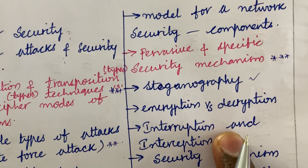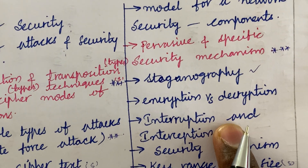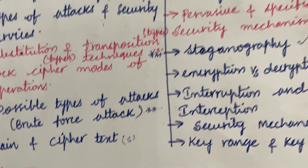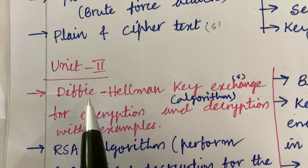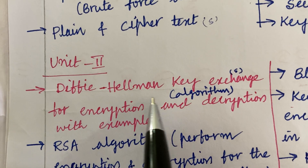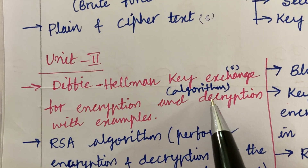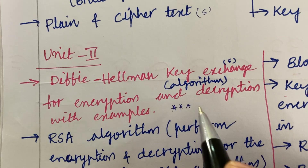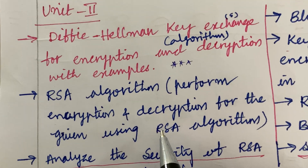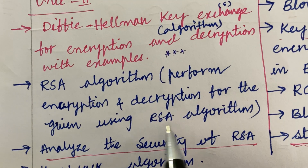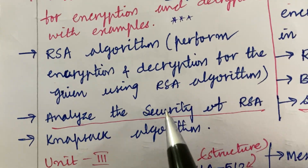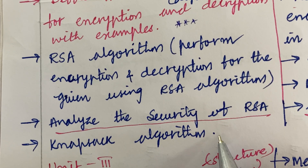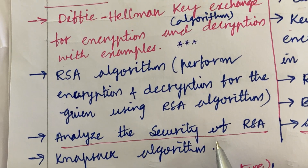From this part we can expect short questions as well as 3A and 3B questions. Do not expect a direct 10-mark question — it may be a combination of 5+5. Moving to Unit 2, the Diffie-Hellman key exchange algorithm — encryption and decryption with an example — is said to be one of the very important and lengthy long questions. RSA algorithm: perform encryption and decryption using RSA is also a key question. Analyzing the security of RSA may be a short question, and the Knapsack algorithm may also be a short question — a 3 and 4 mark combination.